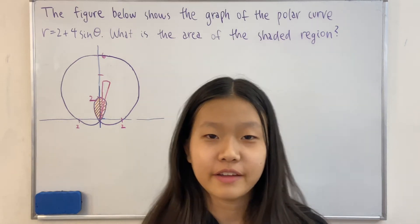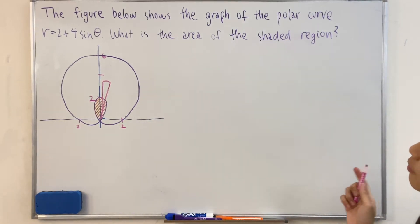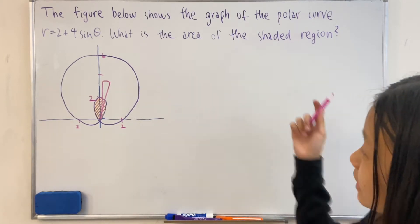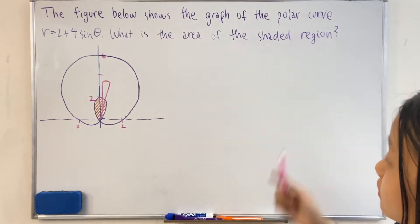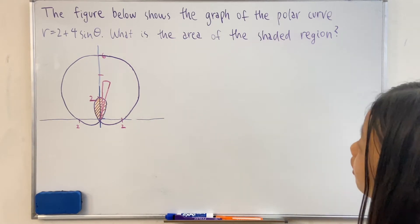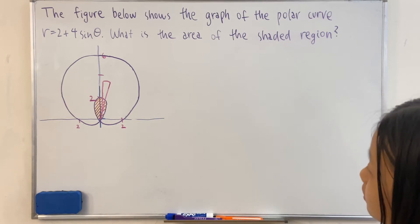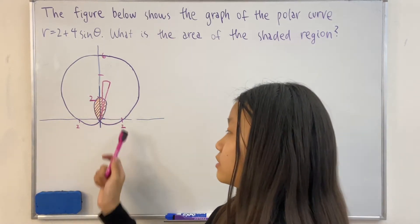Hello everyone, we have a math problem that involves polar equations. It says the figure below shows the graph of the polar curve r equals 2 plus 4 times sine theta. What is the area of the shaded region? So this orange shaded region.